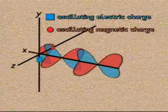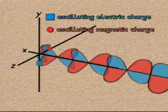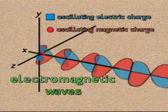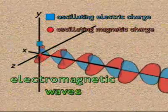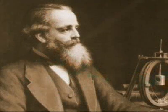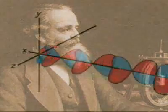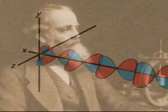The oscillations, or movements back and forth, of electric charges generate electromagnetic waves of energy, which propagate as transverse waves. Maxwell's calculations of the velocity of these waves matched the speed of light and led him to predict that light is an electromagnetic wave.